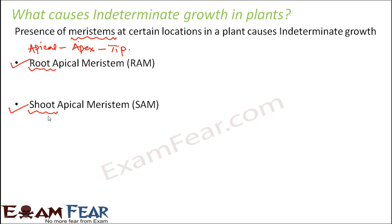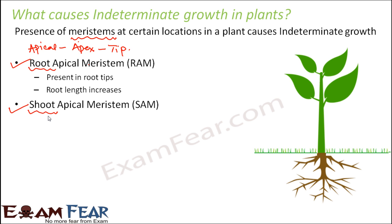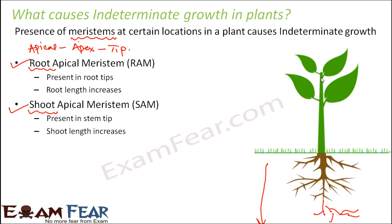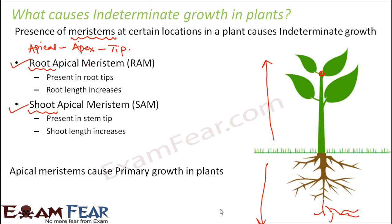Due to the presence of apical meristems, the length of the plant increases — above because of the increase in shoot, and below because of the increase in length of the root. Root apical meristem present in root tips causes an increase in root length; shoot apical meristem present at stem tip causes shoot length to increase. So apical meristems cause primary growth in plants — that is the growth in length. Now, when we talk about indeterminate growth, that not only happens in terms of length or height, it also happens width-wise. So let us see what causes that.